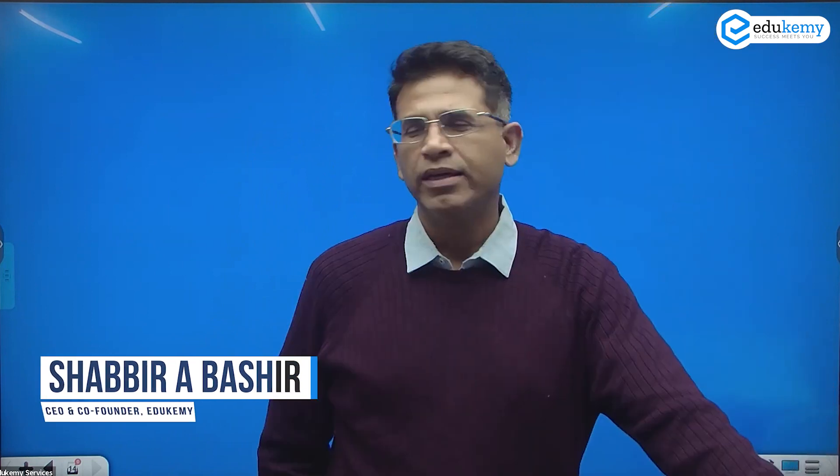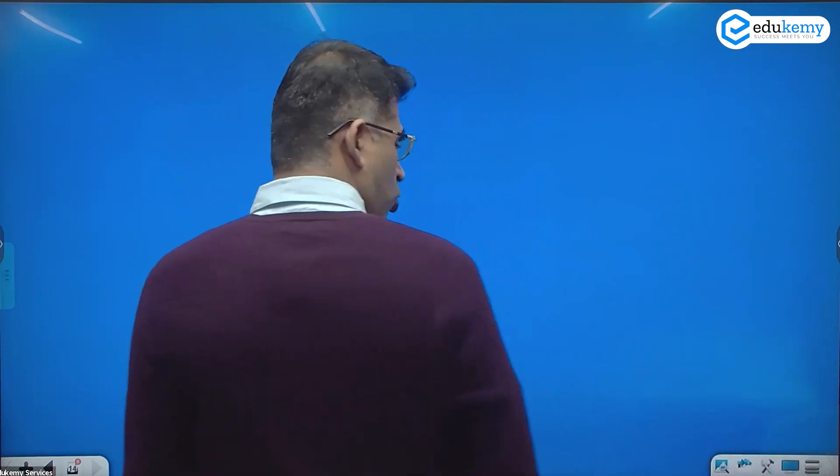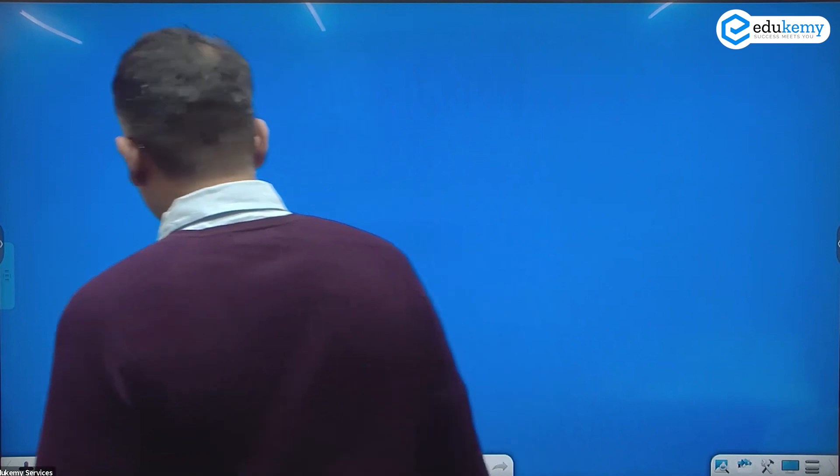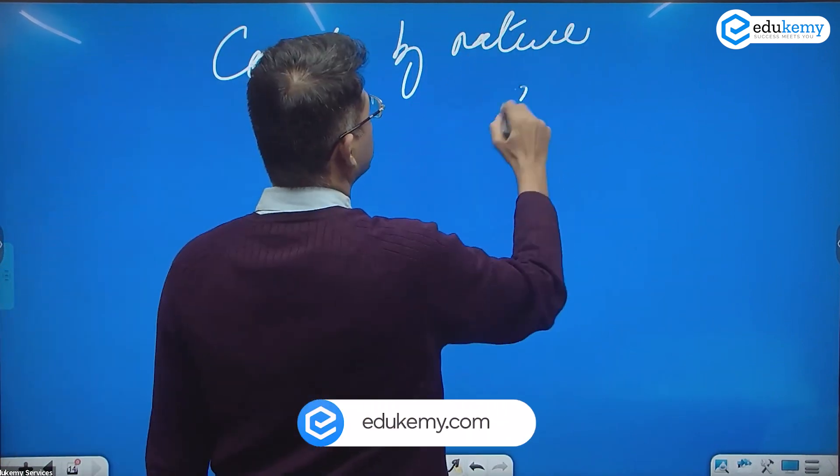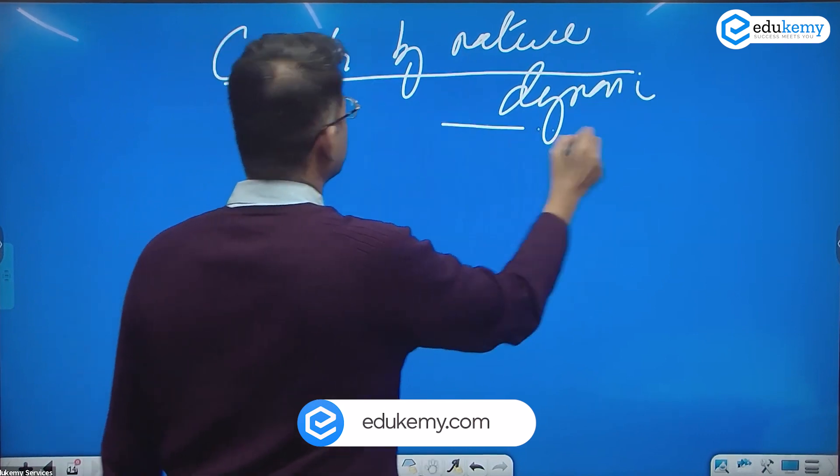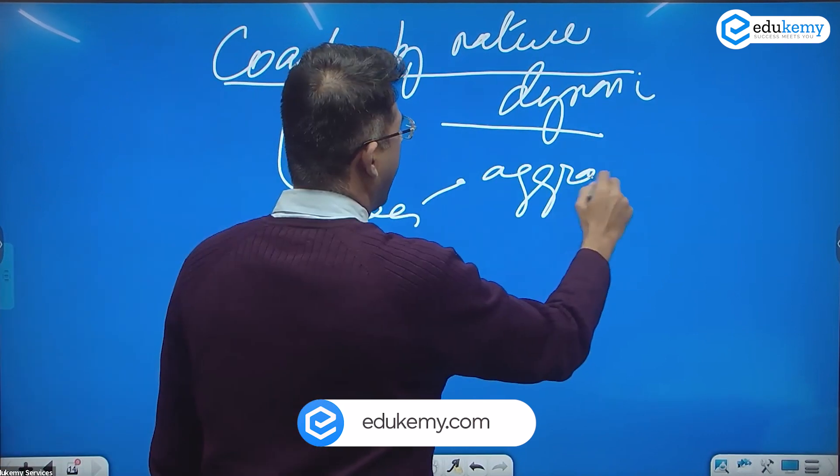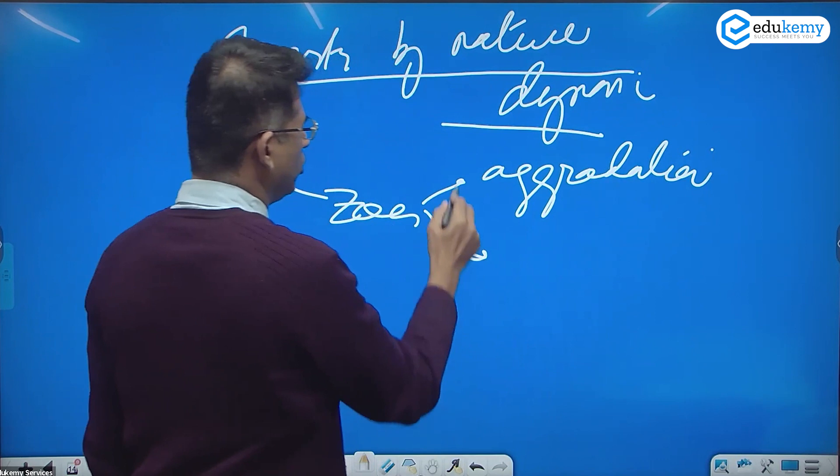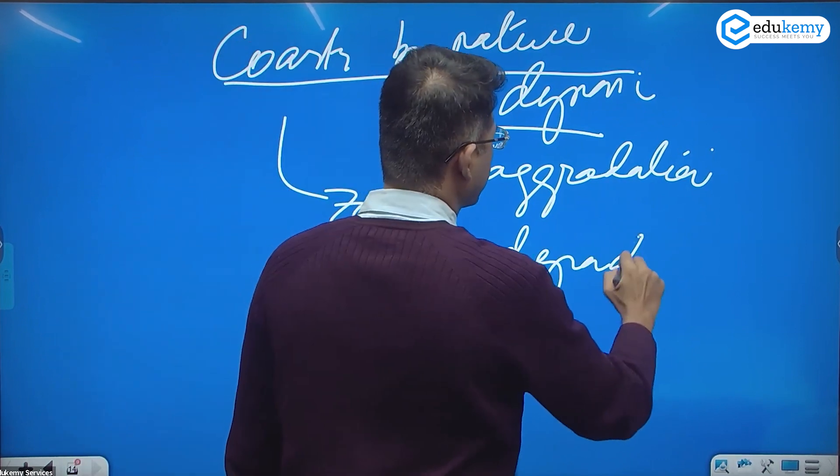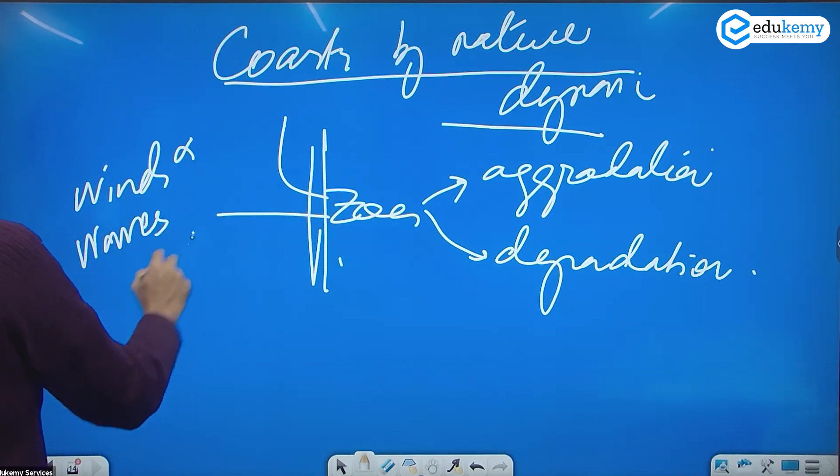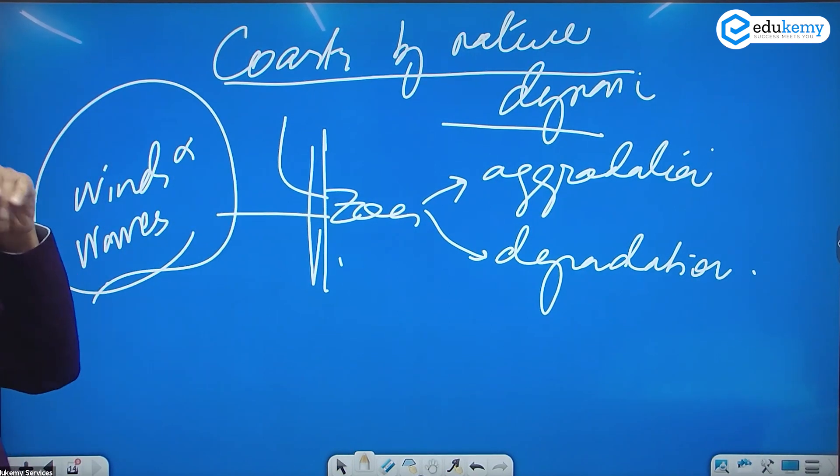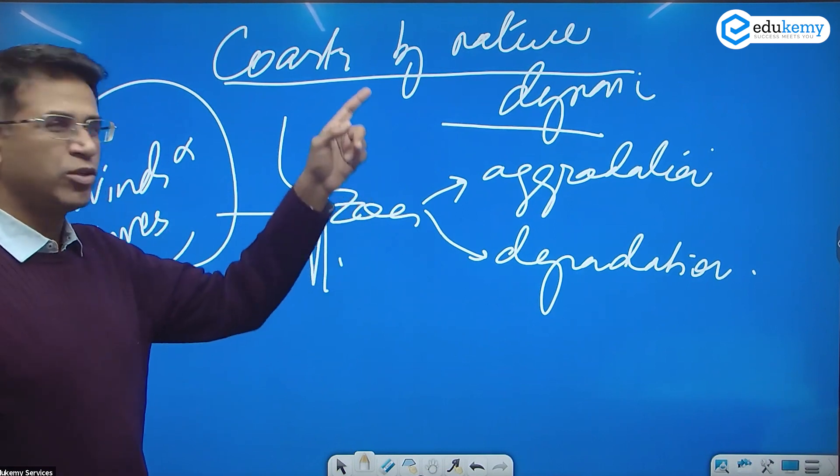Coastal erosion as a problem - a short write-up so that you are not trapped here. Now, coasts by nature are dynamic. Coasts by nature are dynamic. The coasts are zones of aggradation and also zones of degradation. The main agents are the winds and the waves.